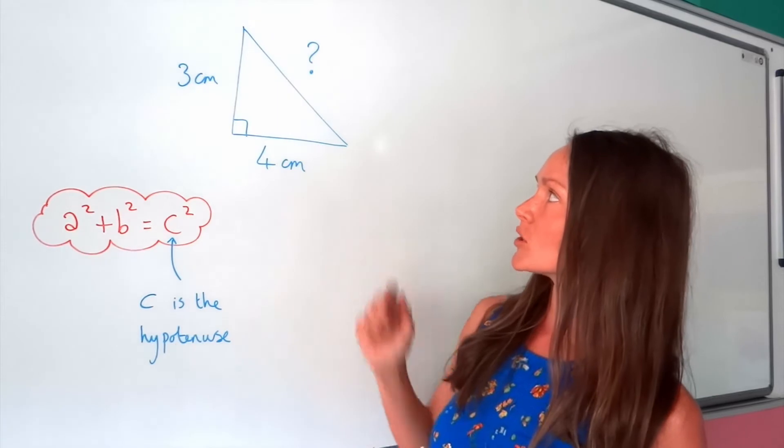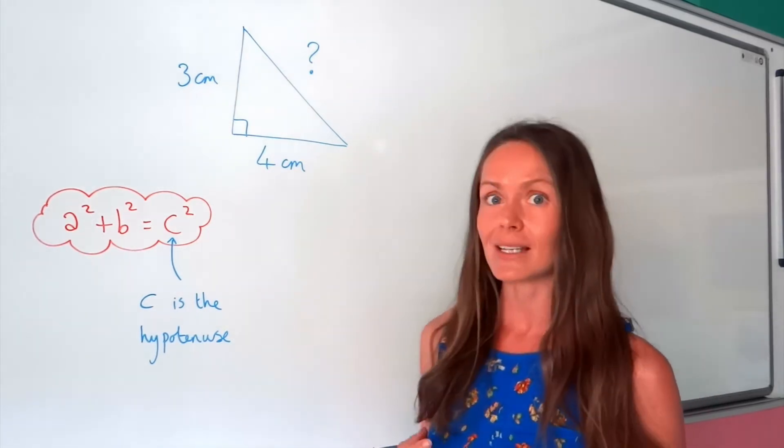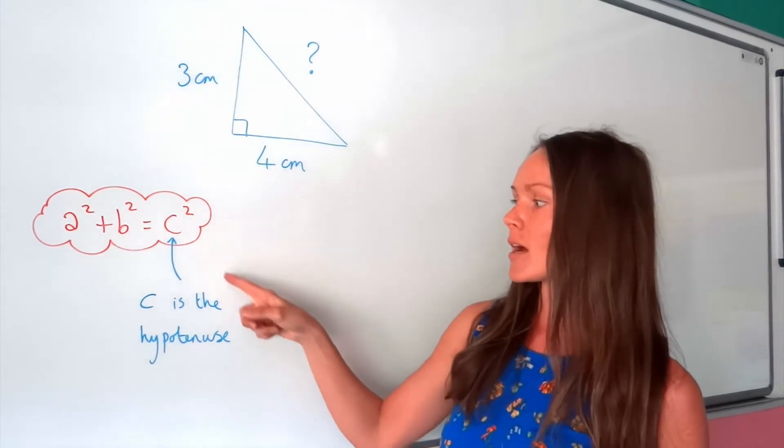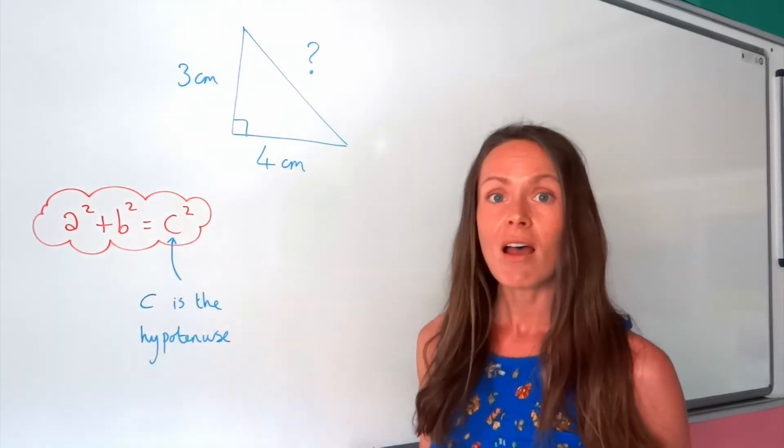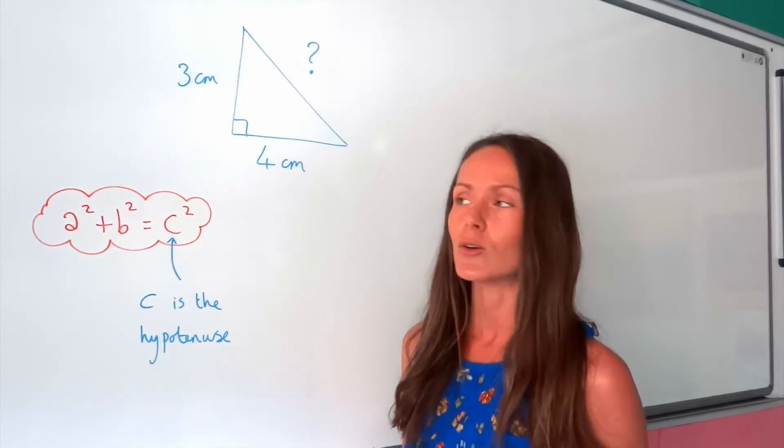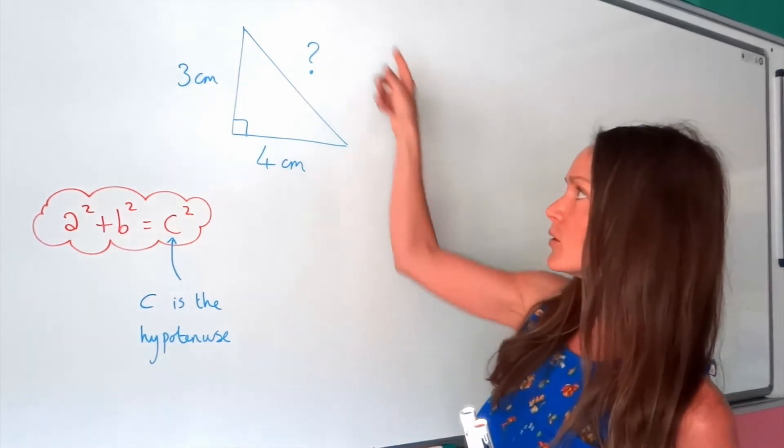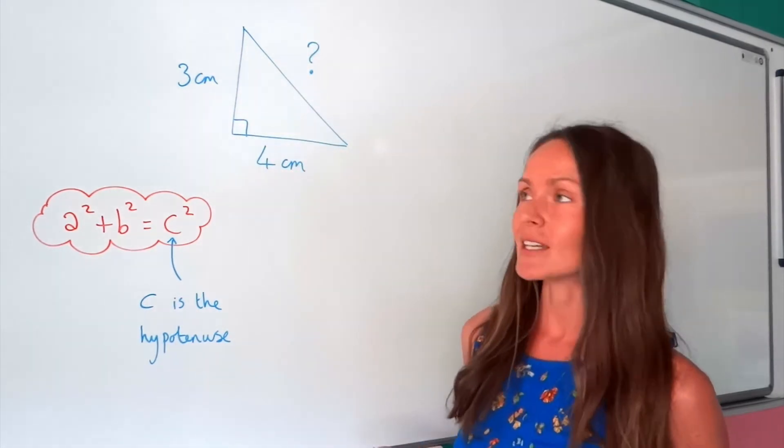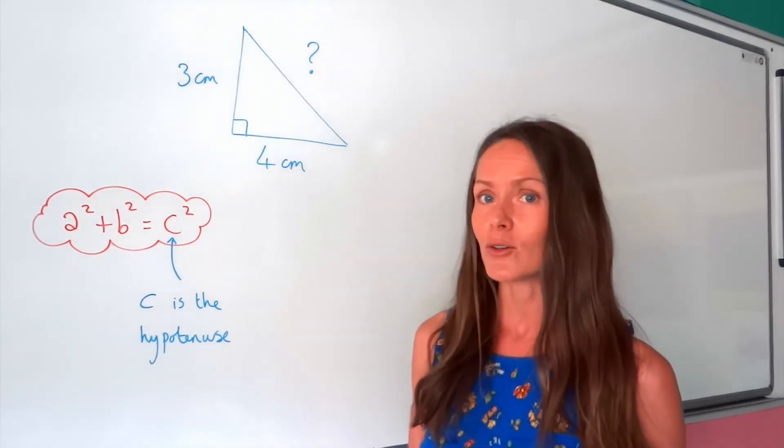So to work out this question here, the first thing you need to do is label the three sides a, b and c. So notice how here I've written c is the hypotenuse. The hypotenuse is always the longest side in the triangle. So if you're not sure when you're looking at this diagram which one's the longest side, you can always find it because it's always the one that's opposite the right angle.